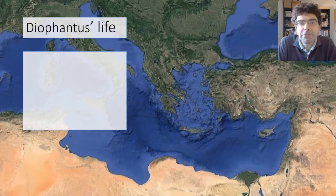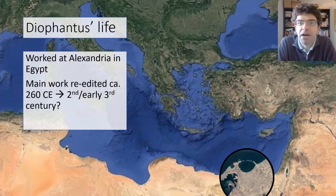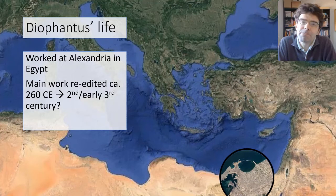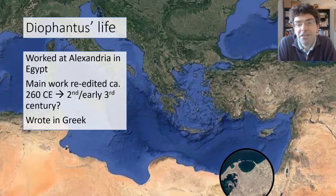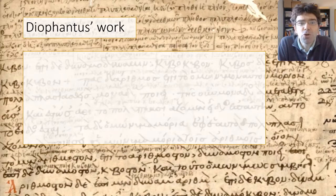Diophantus was a mathematician from Alexandria in the north of Egypt. We have very little evidence about his dates, though one source suggests that his work was already being re-edited by about 260 CE, so he must have been at least a few decades before that. Most people place him in the second or the early third century CE. At that time Egypt was part of the Roman Empire, but much of the intellectual life in Alexandria, which was the capital of the province, was still conducted in Greek. In fact the city had been a major hub for science within the Greek-speaking parts of the Mediterranean for a good four or five hundred years by that point.